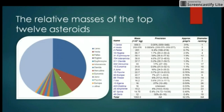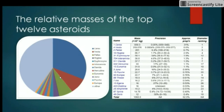This is a pie chart of the masses of asteroids. The biggest asteroid in the belt is Ceres, which is the size of the whole of Texas.